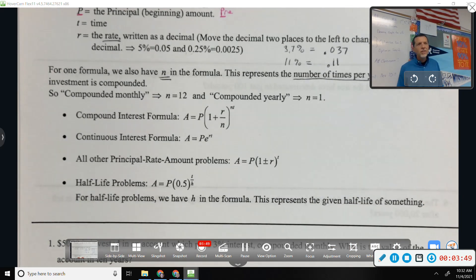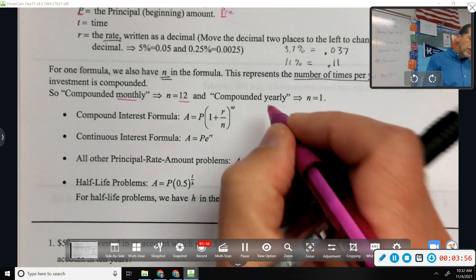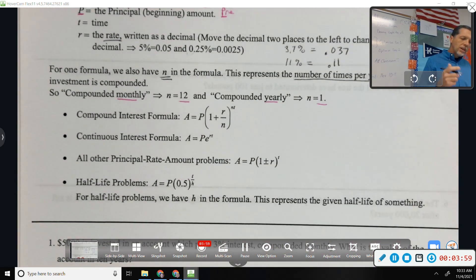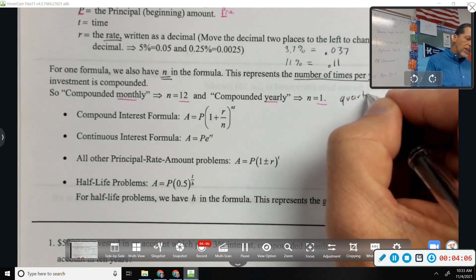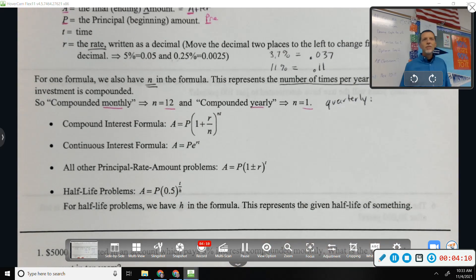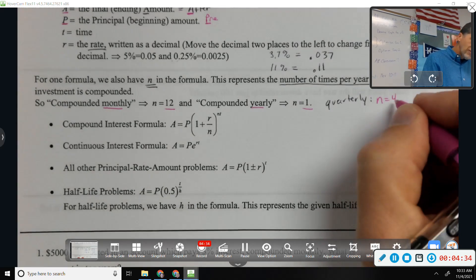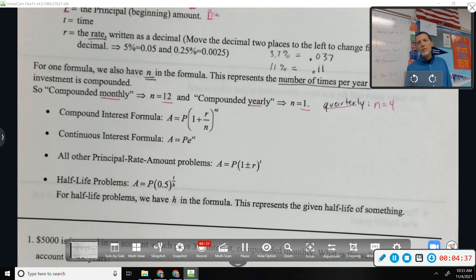For one of our formulas, there's an N in the formula. N represents the number of times per year that an investment is compounded. So monthly, that would be 12. Yearly would be 1. What else could we come up with? Quarterly, that sounds fancy. We won't do semi-annually because no one can ever remember if that's twice per year or every other year. Me included. What about quarterly though? What would N be for quarterly? Four. Right? Four quarters in a dollar, four quarters in a football game, four quarters in a year.